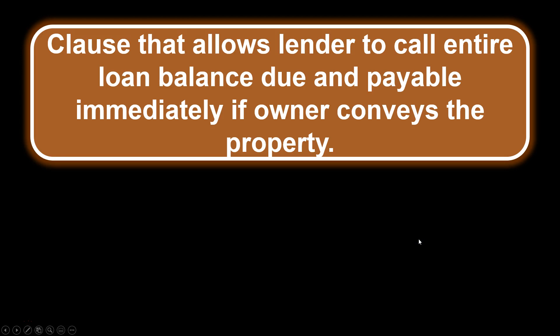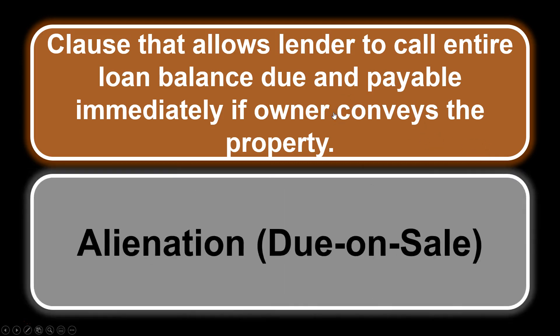This clause allows a lender to call the entire loan balance due and payable immediately if the owner conveys the property. This is called the alienation clause — alienation means to sell or convey the property. It is also called a due-on-sale clause. When the property is sold and conveyed, the alienation clause takes effect and the entire loan balance becomes due and payable immediately.